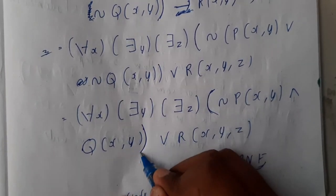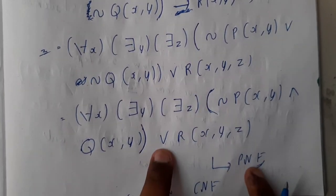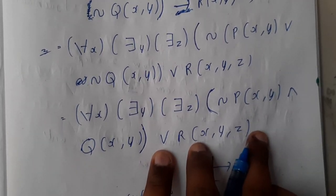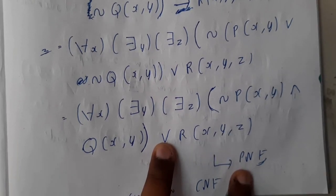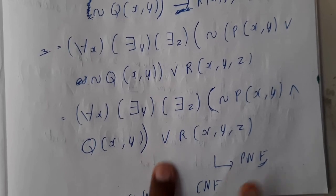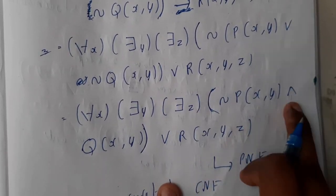If you observe here, these big brackets, this will be your PNF. In between or, yes it's PNF. In between and means it is CNF. So now we need to convert this into CNF. Here we are having and, so I hope everyone got an idea now.